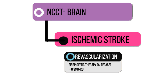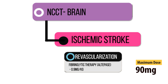Revascularization is the treatment of ischemic strokes. Fibrinolytic therapy with alteplase is the most commonly used method of revascularization, but newer methods like vascular interventions or stenting are also gaining rapid popularity. The alteplase dose is 0.9 mg per kg body weight, with a maximum dose of 90 mg. Ten percent of the dose is given as the loading dose, and the rest is given within an hour.